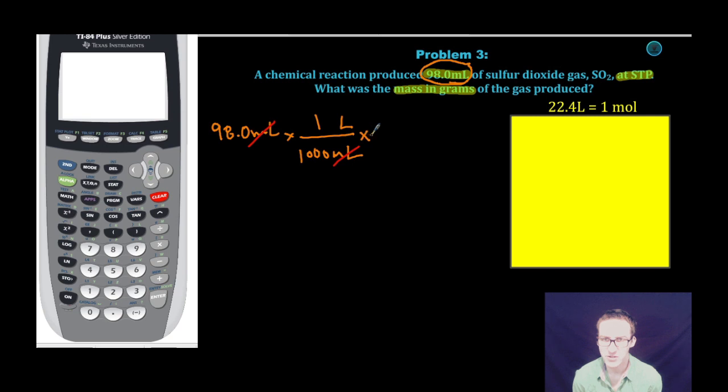So, as I think about my next conversion factor, I definitely want to put liters in my denominator here so that unit will cancel out, but I'm going to convert here to moles of that gas. I can't go directly to grams. This relationship, one mole to 22.4 liters, is going to be true of any gas as long as you're at STP. Notice now my units of liters have canceled out and I'll be left with units of moles.